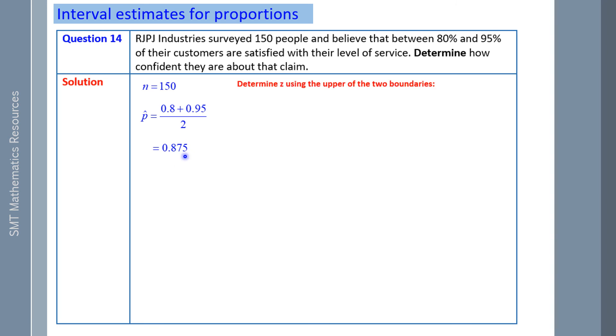So determine z using the upper of the two boundaries. So the upper of the two boundaries is 95%. So we know the upper limit, we know P hat, we know n. We just don't know what level of confidence they have. We just don't know what z is. So 87.5% was my P hat. I don't know z, but I can sub in my 87.5 twice. And we knew that 150 people were surveyed. So the only value I don't know is z.